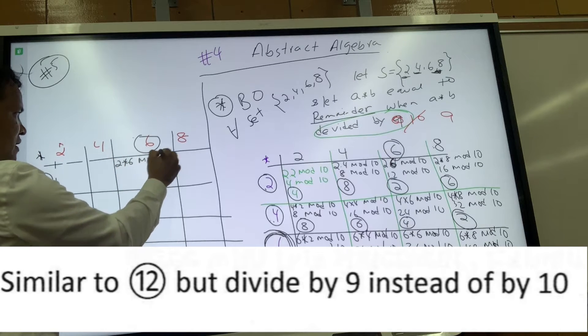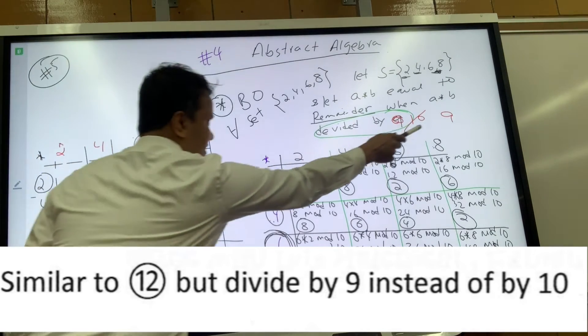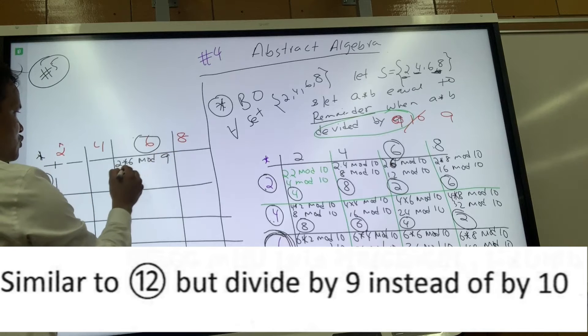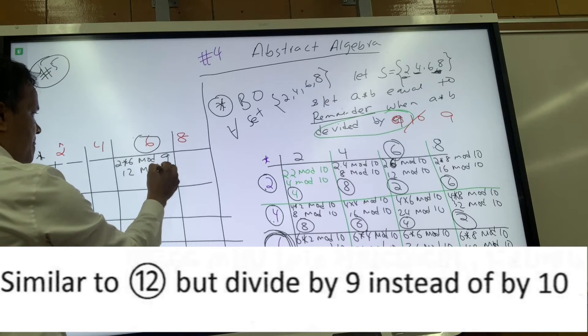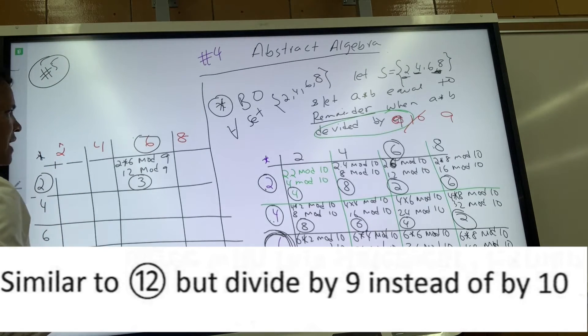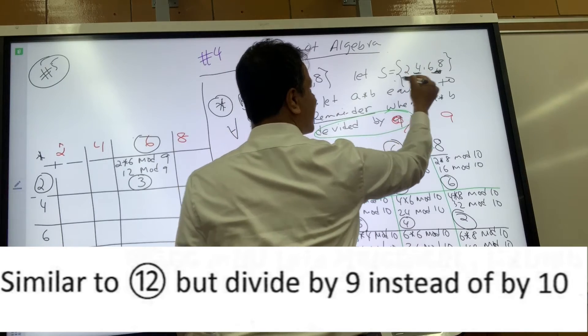Let's consider 2 and 6. 2 times 6 mod 10... not mod 10, mod 9. Let's cross out 10 and write mod 9 instead. So 12 mod 9, which is of course 3, but 3 is not in the set S.